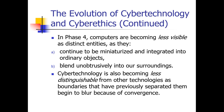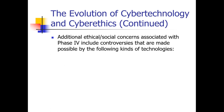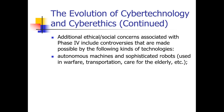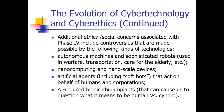No longer are we having standalone devices that operate individually. So additional ethics and social concerns associated with phase four will include controversies made possible by autonomous machines, sophisticated robots, self-driving cars, adaptive learning devices, nanocomputing, nanoscale devices, smart devices that govern health, pacemakers that have an IoT component, artificial intelligence, and artificial agents like softbots that can act on behalf of other entities — and of course AI in bionic chips and implants. A pacemaker is a perfect example of this.